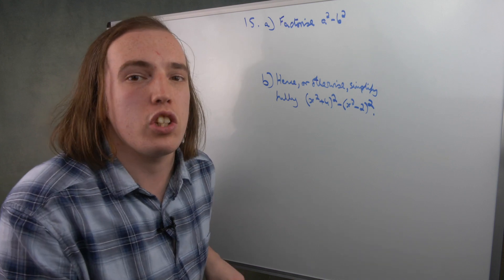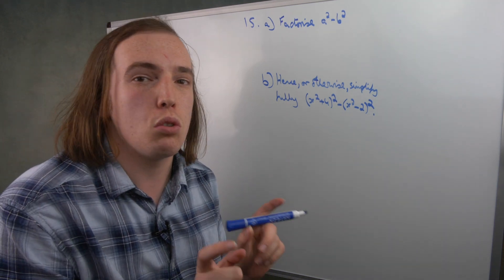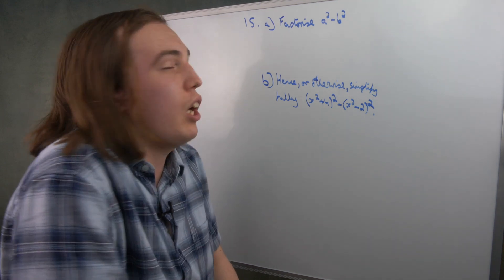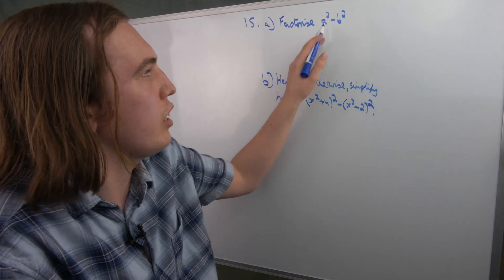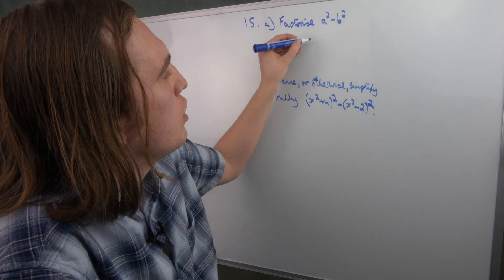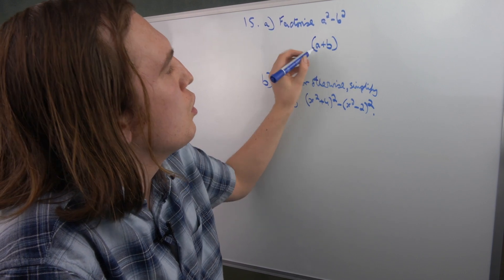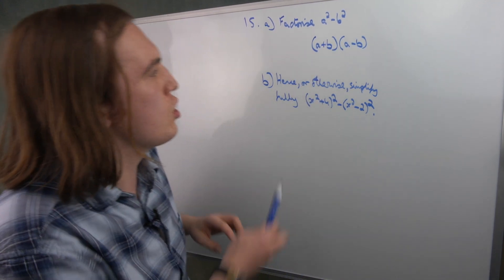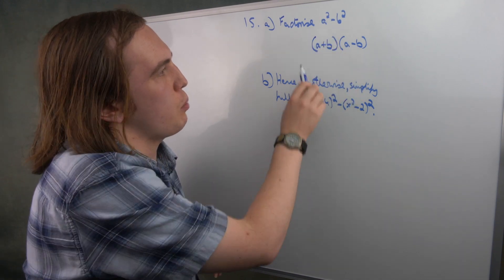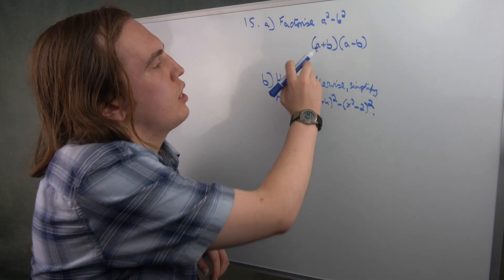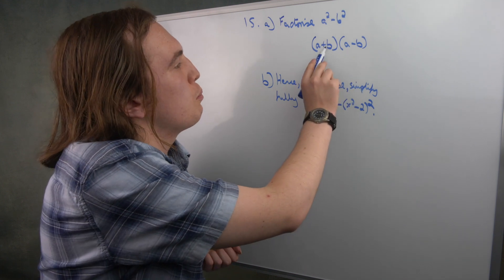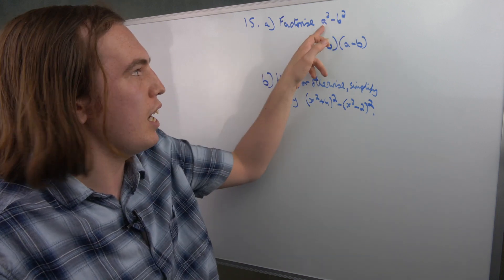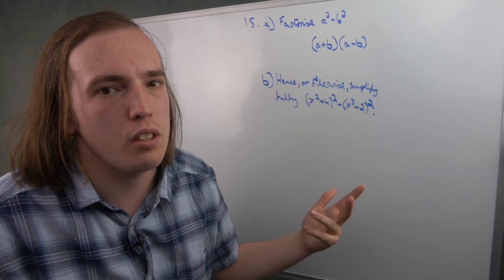This question is about factorization — specifically, splitting things into two brackets. Here we have one square number minus another square number. If you have generally a squared minus b squared, you can split that into (a plus b)(a minus b) — the difference of two squares. This works because expanding back out: a times a is a², b times minus b is minus b², and the cross terms a times minus b and b times a cancel each other, hence no middle term.